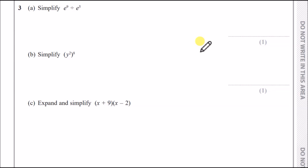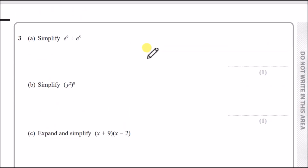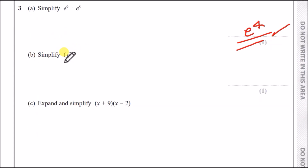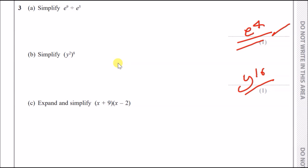Number three — algebra. Part a: simplify e to the power of 9 divided by e to the power of 5. When dividing terms with the same base, subtract the powers: 9 minus 5 gives e to the fourth. Part b: simplify (y squared) to the power of a. When you have a bracket with two powers, multiply them: 2 times a, but here it's 2 times 8 which gives y to the 16.